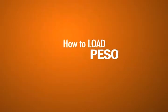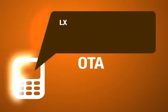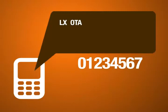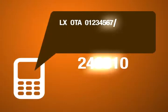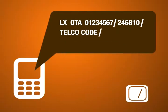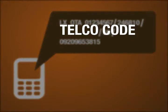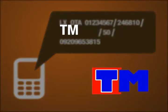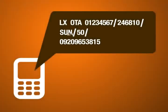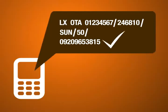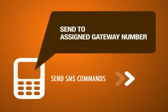How to Load Peso Incremental OTA Load (Pa Piso Piso): Just type LX OTA, Your ID Number, slash, Your PIK, slash, Telco Code, slash, Amount, slash, Customer's Cell Phone Number. Telco codes allowed for this command are GLOBE, TM, or SUN only. Make sure that all the information you entered are correct, particularly the PIK, telco code, and the customer's cell phone number. Then send the SMS command to your assigned gateway.